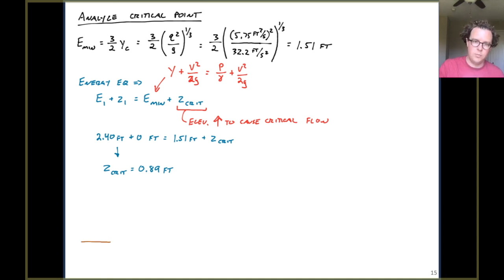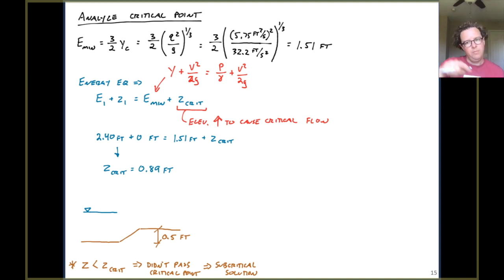So let's look at our problem again. We had a bed elevation, we had that sort of bump of 0.5 feet. The bump that we made was not enough to reach the critical point. It's less than that zcrit value. That means we did not pass the critical point. And we want to go with the subcritical solution, the larger of those two depths of 1.72 feet of depth on the right hand side.